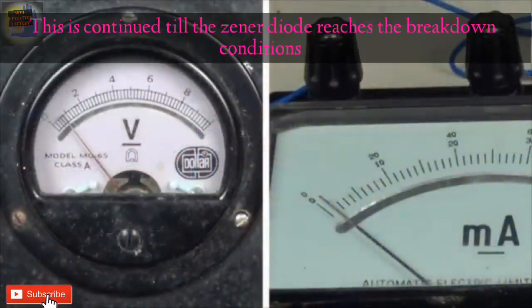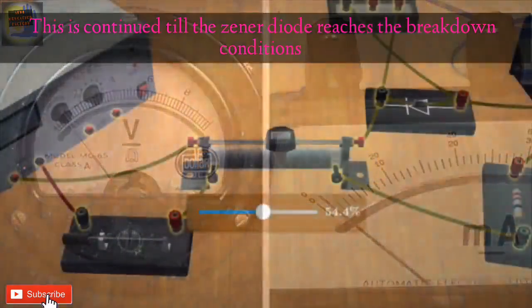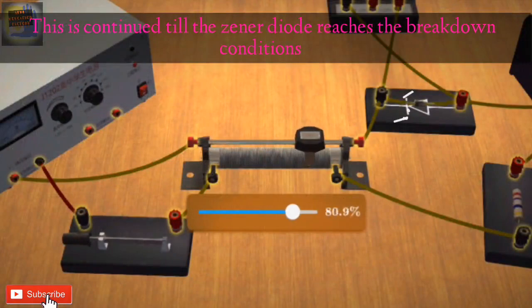This is continued till the Xenor diode reaches the breakdown conditions. The breakdown is indicated by a large current in the milliammeter.